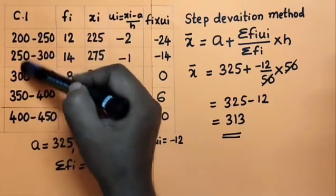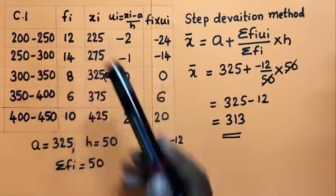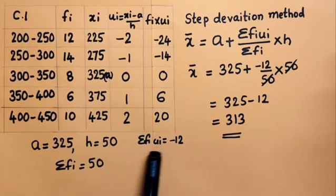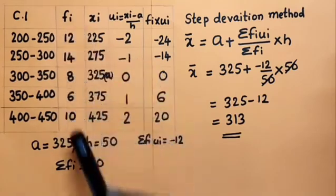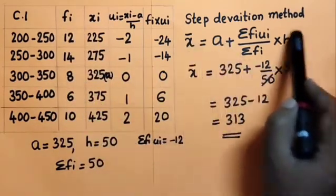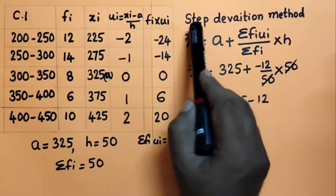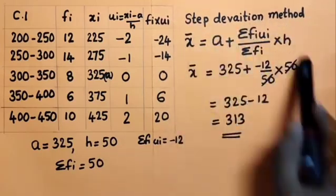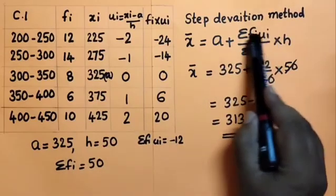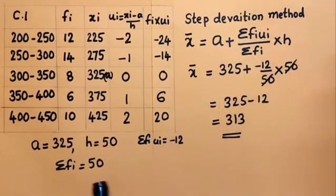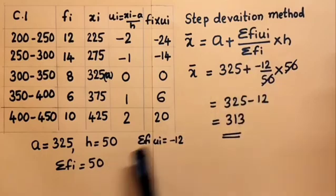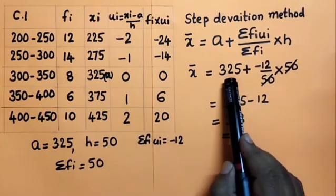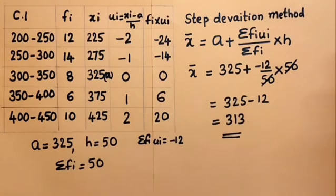To summarize: Σfiui = −12, Σfi = 50, h = 50. Substituting: x̄ = 325 + (−12/50) × 50 = 325 − 12 = 313. The mean daily wage of workers of the factory is 313 rupees. Is it clear?